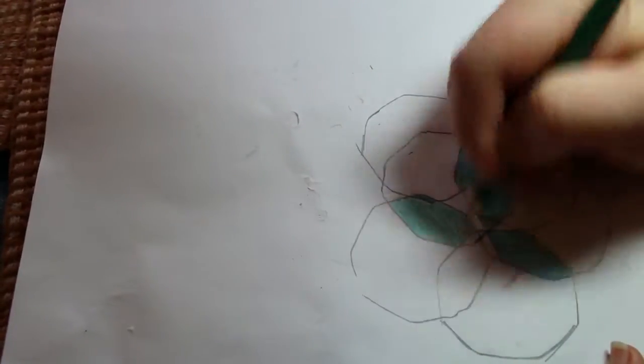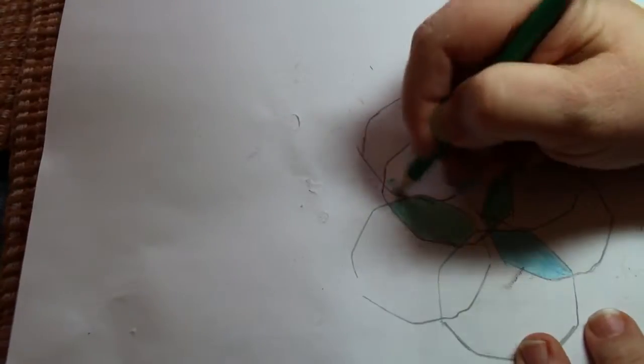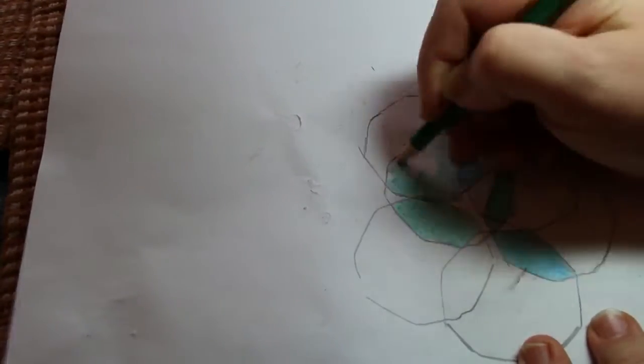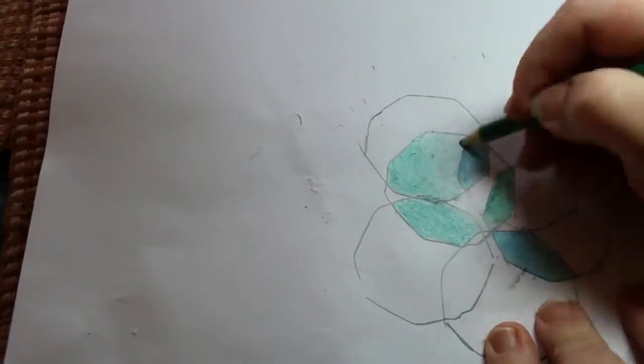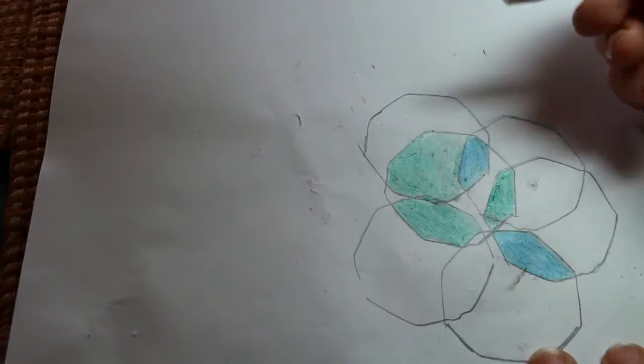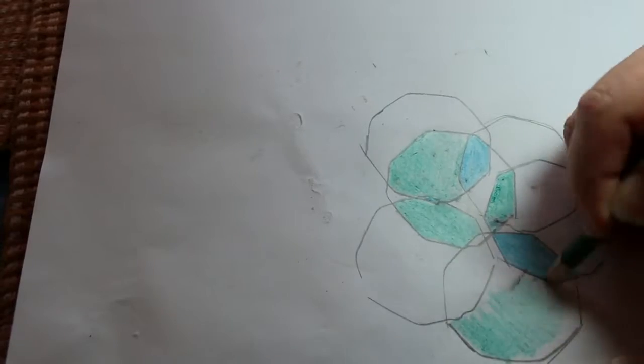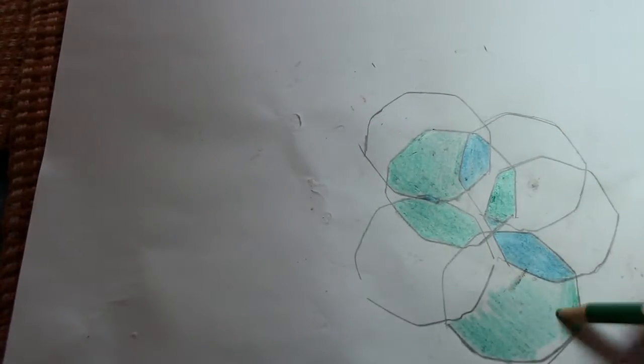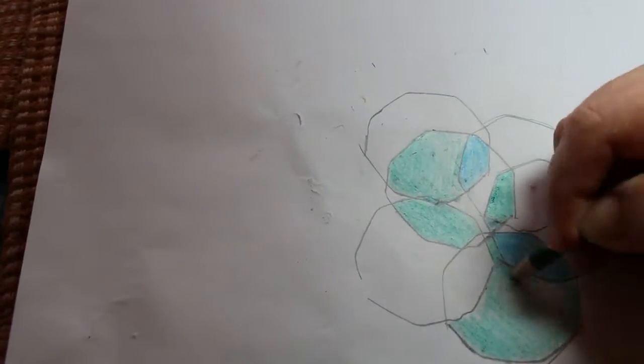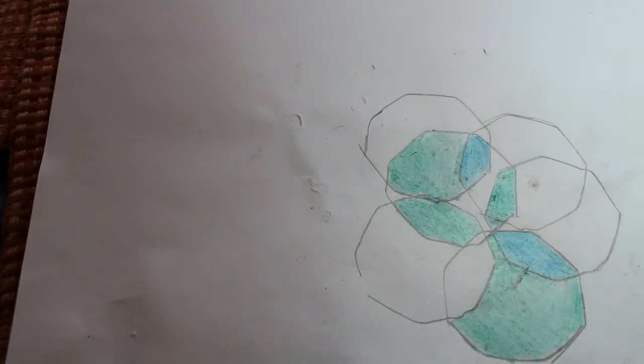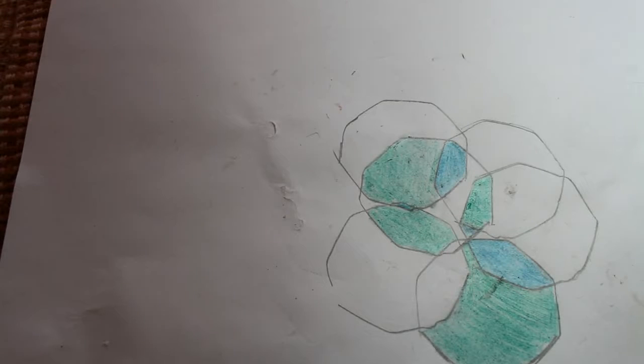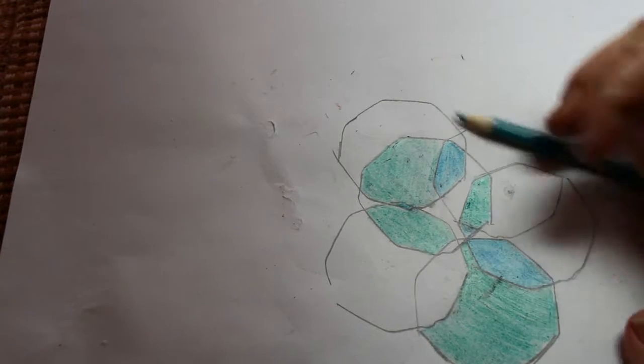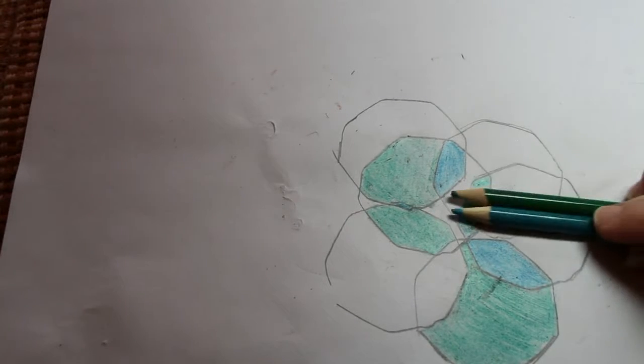Now I'm only going to use two pencils. The point of using just two pencils is to show you that even with limited resources you can still get something that's interesting. What I'm going to do is take these little Venn diagram areas and start coloring them in.